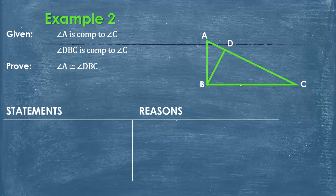Second example. We are given that A is complementary to angle C. And DBC is complementary to angle C. And we need to prove that angle A is congruent to angle DBC.